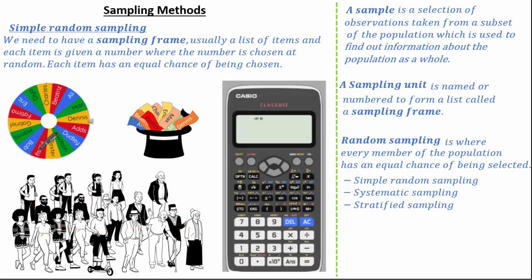These three methods of simple random sampling are called lottery sampling and are clear methods where every member of the population has an equal chance of being selected.